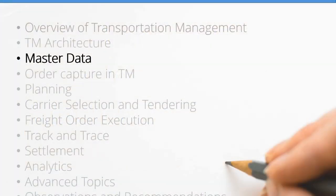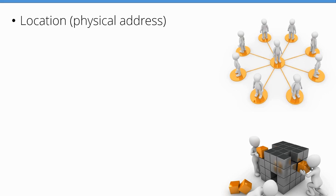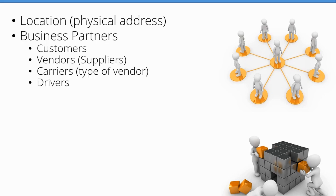This lesson is a brief overview of some of the master data required for a TM implementation. Master data includes — and this is not an all-inclusive list — a location, the physical address of the locations you're shipping to or shipping from. They're closely related to what SAP calls business partners, which may be customers, suppliers, or even drivers. There is typically a pretty hard link between a ship-to customer and a location.